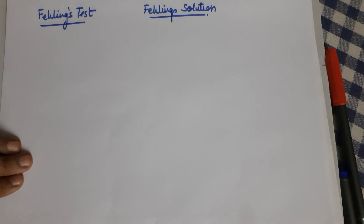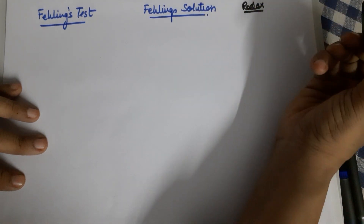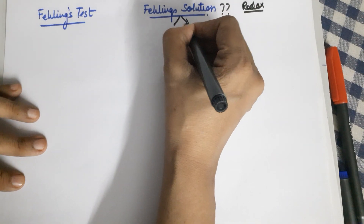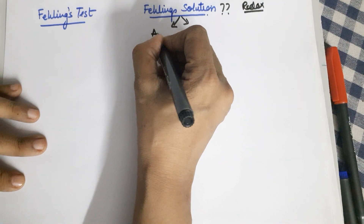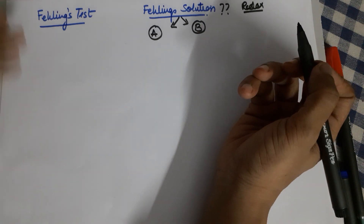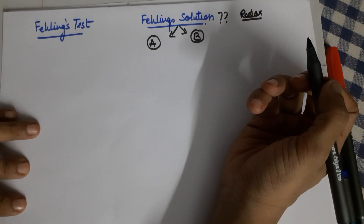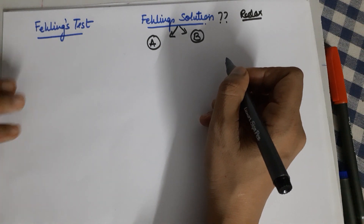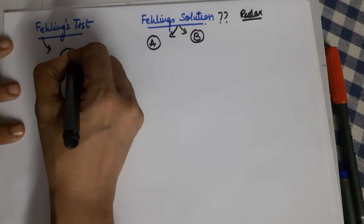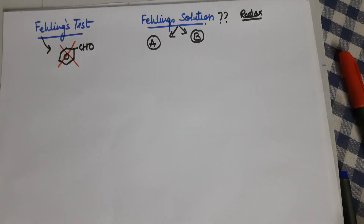The Fehling test, like the Tollens test, also involves a redox reaction. For the Fehling test you require a Fehling solution, which is made up of two parts: Fehling solution A and Fehling solution B. You should know the composition of both — it is a commonly asked board question and a viva question since this is one of your lab practicals for identifying aldehydes. Remember, Fehling test is not applicable for benzaldehyde and aromatic aldehydes.